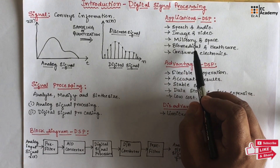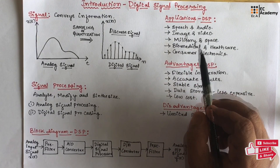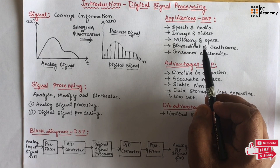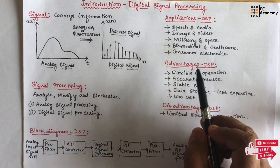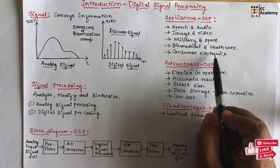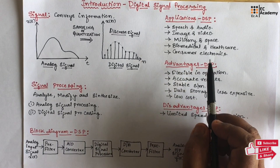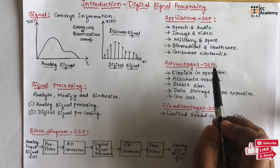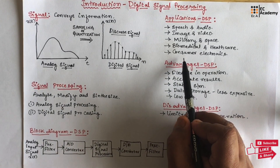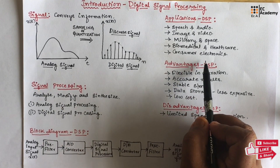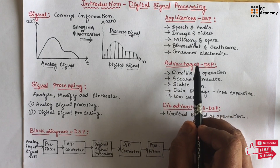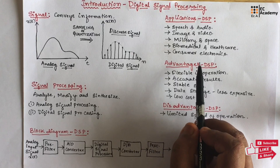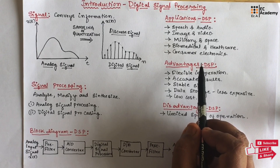It can be used for military and space applications — for example, radar processing, missile guidance, etc. It can be used for biomedical and healthcare — for example, ECG analysis, X-ray analysis, scanning, etc. It can be used for consumer electronics — for example, digital television, digital camera, mobile phones, interactive entertainment systems, etc.